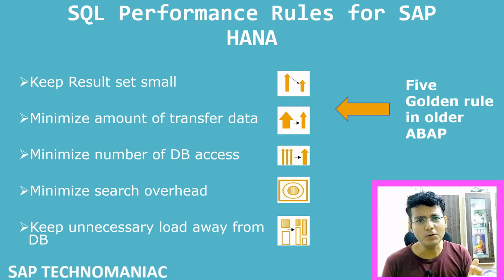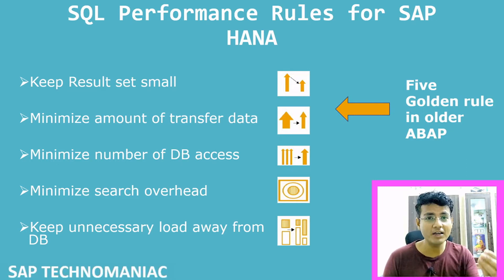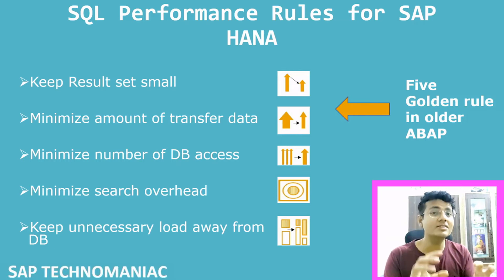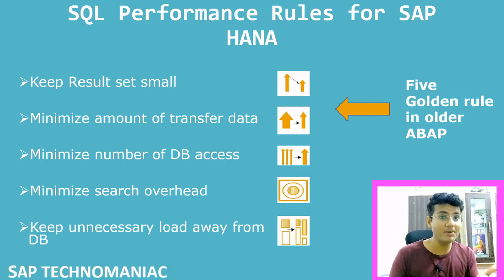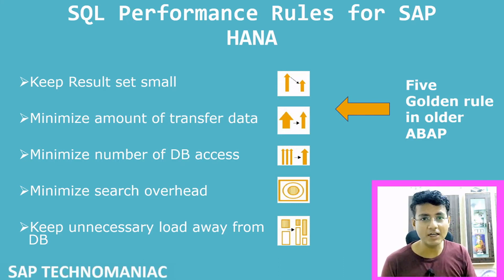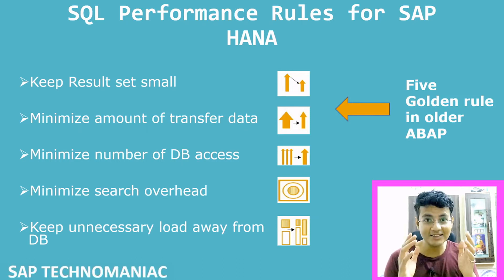The fifth rule is: keep unnecessary load away from the database. If you are hitting one table with the same fields in different places in the same program, you are unnecessarily forcing the database to repeat work. The database has only one server processing everything, whereas at the application level there are multiple servers. Also, if we are sorting data, we can sort at the application layer instead of at the database level.